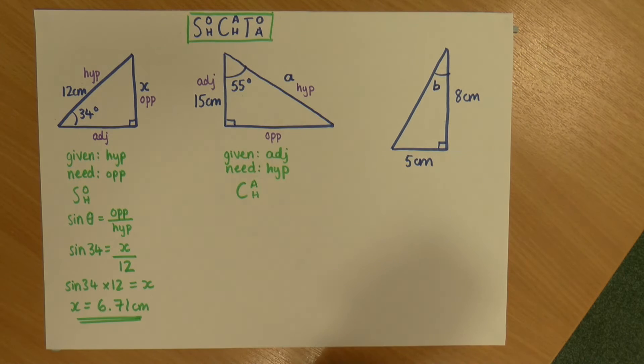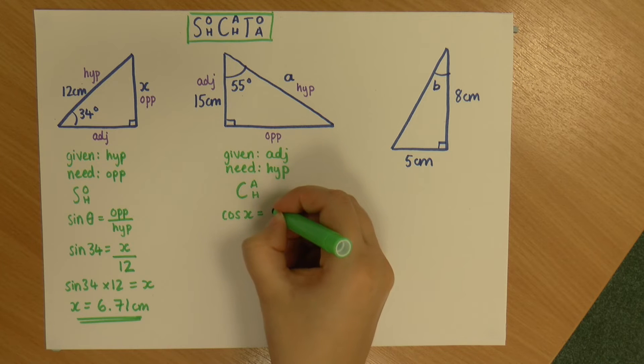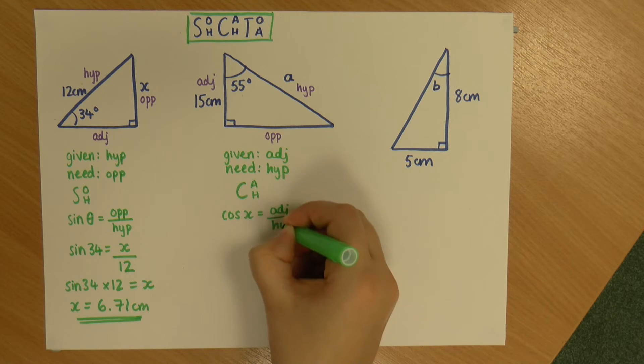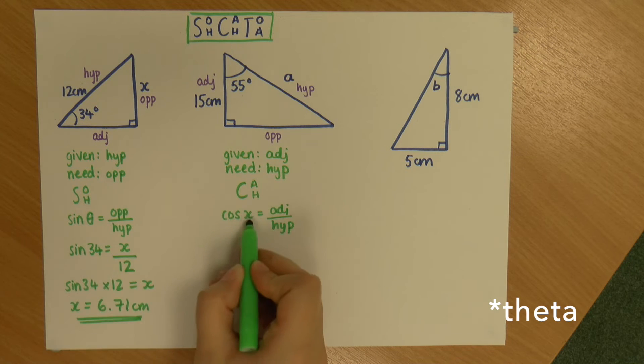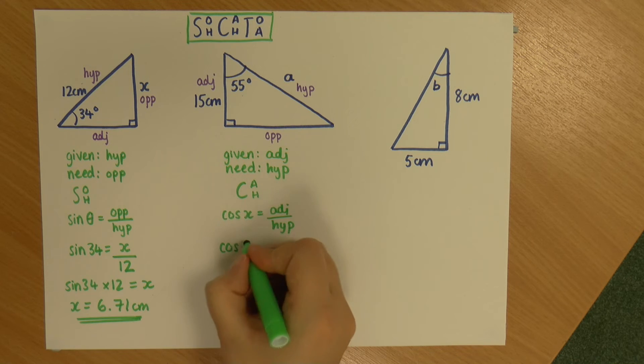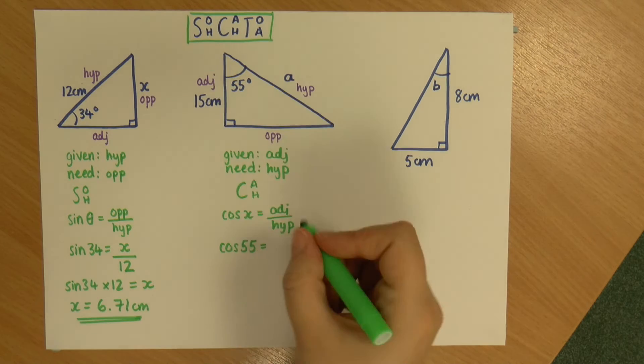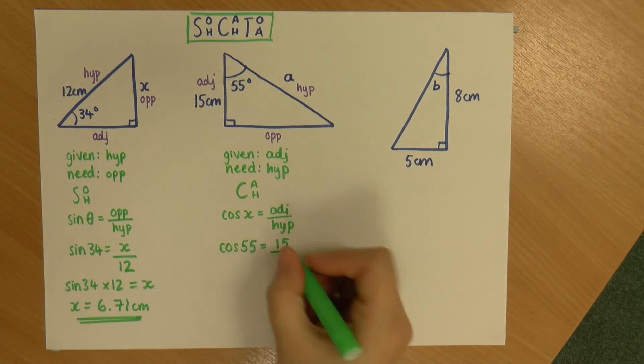So it's the one that looks like that. Or you may see it like that. And again, I've used an X this time instead of a theta. So this may look more familiar to you with an X. But again, that X is just the angle. Alright, so again, I'm going to input my numbers. So my angle is 55. So cos 55 is equal to the adjacent, which we know is 15, divided by the hypotenuse, which is A.